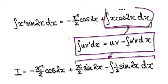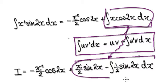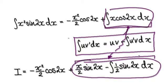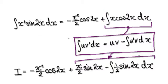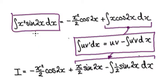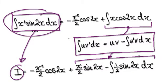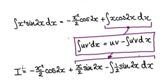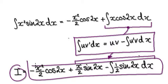Just looking at this here, repeating the process will then give you this. So we are saying, let this be capital I, so it's just neater. Let this whole thing here be capital I, then capital I equals this whole thing.